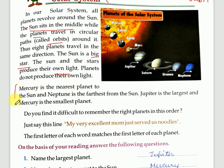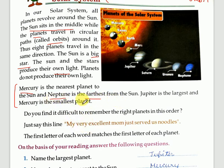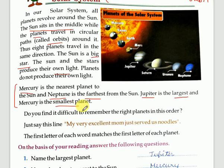Now, few facts you should know about the solar system. Which planet is nearest to the sun? It is Mercury. So Mercury is the nearest planet to the sun. Which planet is farthest from the sun? It is Neptune. Which is the largest planet? The answer is Jupiter. And the smallest planet is Mercury.